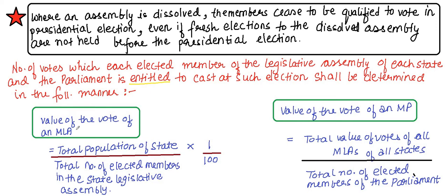The first manner is the value of the vote of an MLA. How is it calculated? Total population of the state divided by the total number of elected members in the State Legislative Assembly, divided by 1/100. That gives you the value of the vote of an MLA.